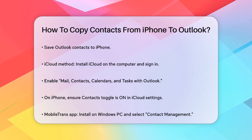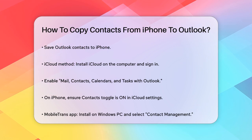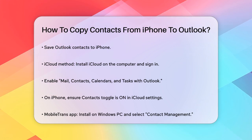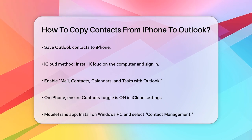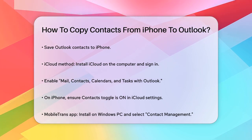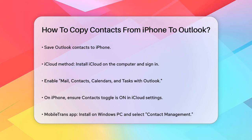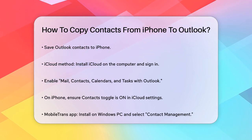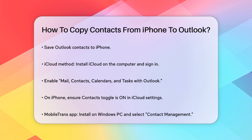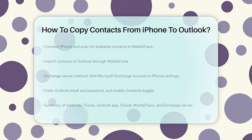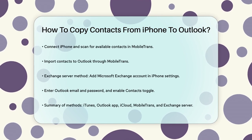For those who don't have iTunes or prefer a different approach, there's the Mobile Trans app. Install Mobile Trans on your Windows PC, launch the app, and select the Contact Management option. Connect your iPhone to the PC via a cable, and the software will scan and display all available contacts. Click the Import button, choose Outlook as the destination, select the account you need to import contacts into, and wait for the process to complete.